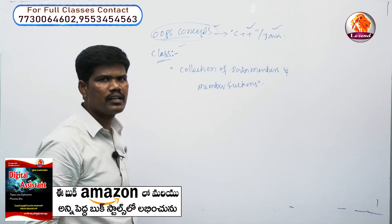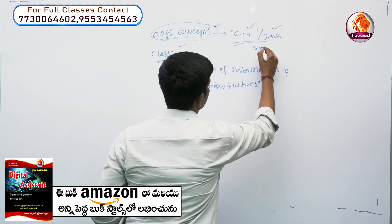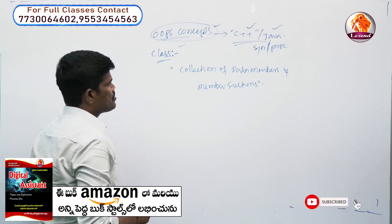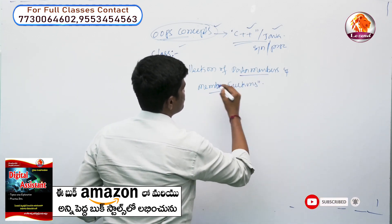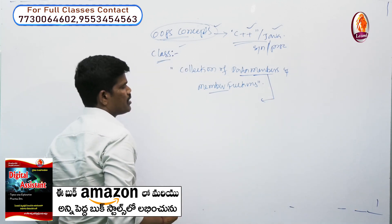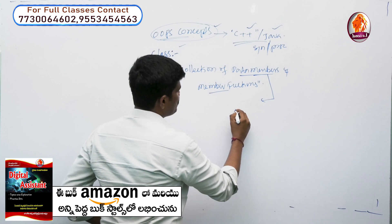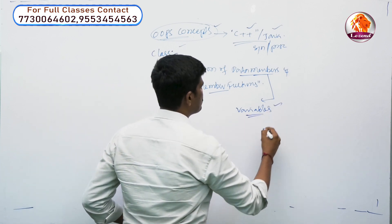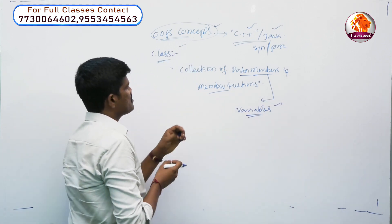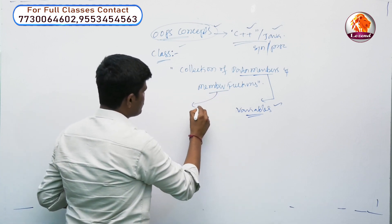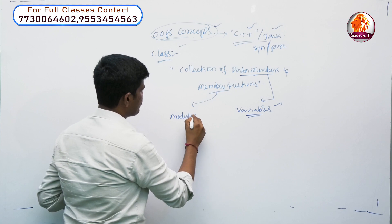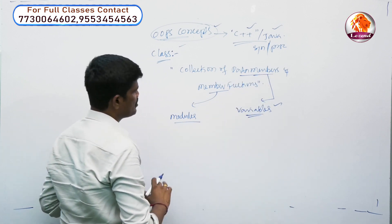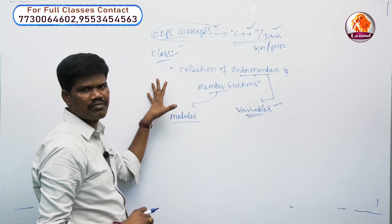In the last paper, most of the questions are related to syntax and programming. The collection of data members and member functions is called a class. Data members are called variables. The member functions are called modules. Modules of a class are called member functions. Variables of a class are related to data members. This is the basic definition of the class.